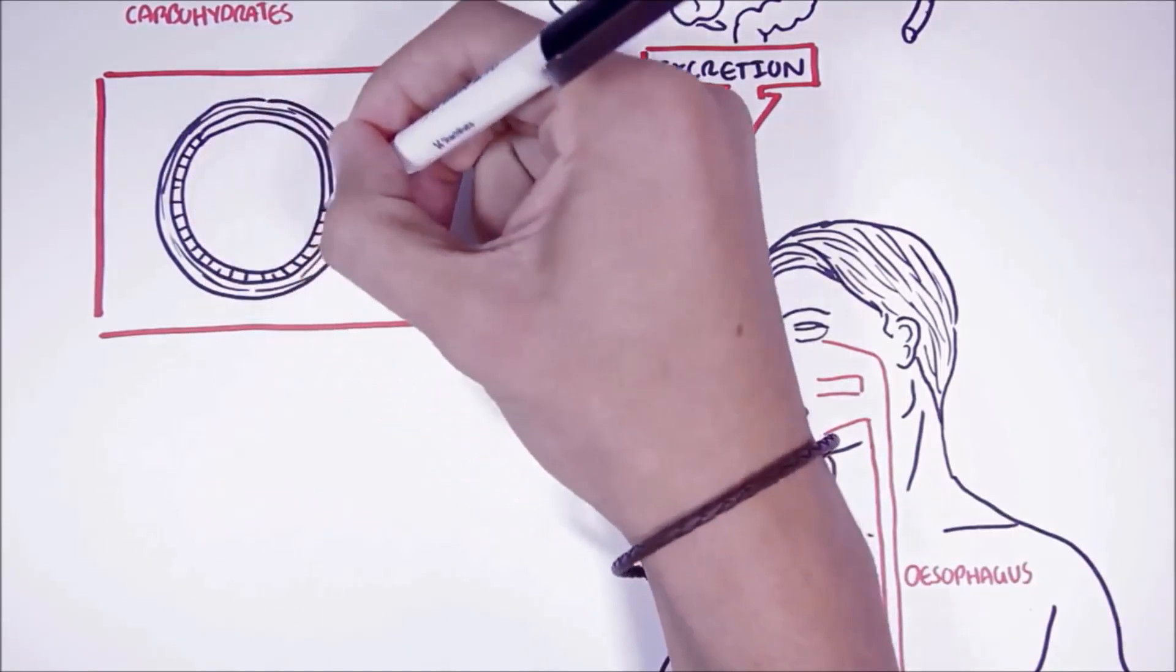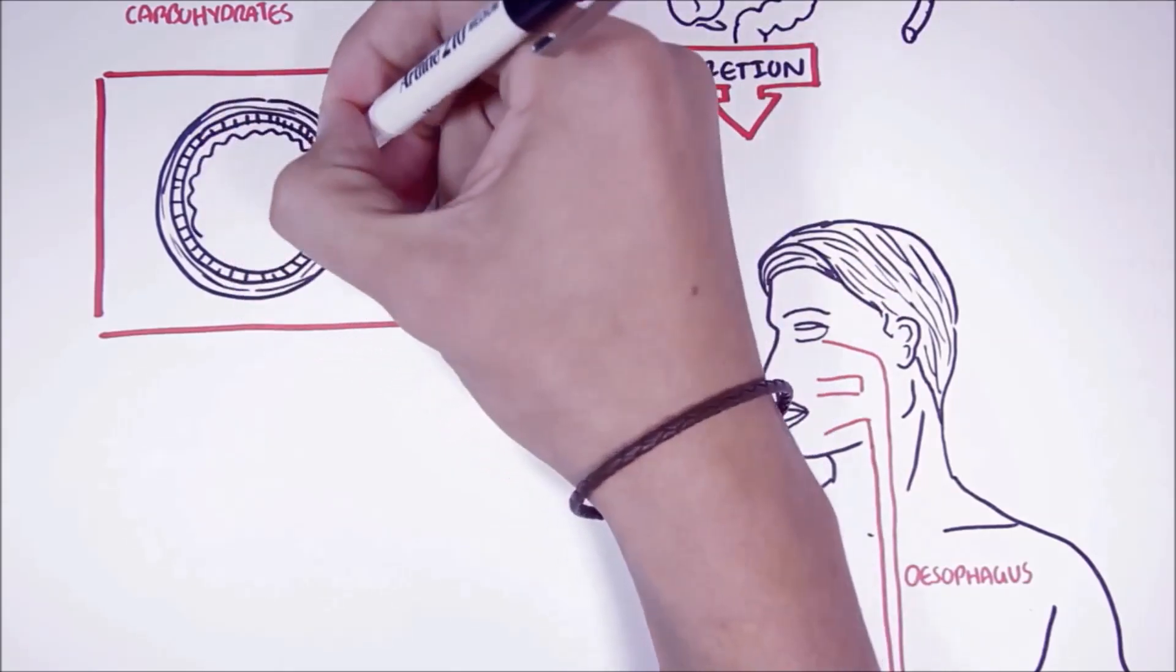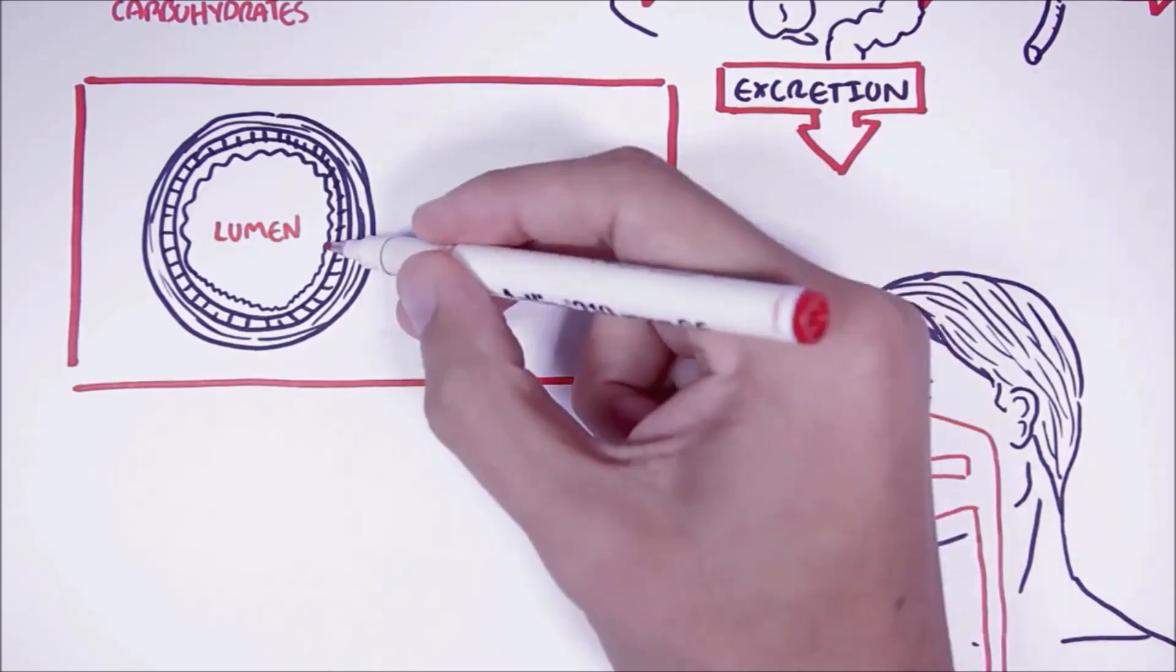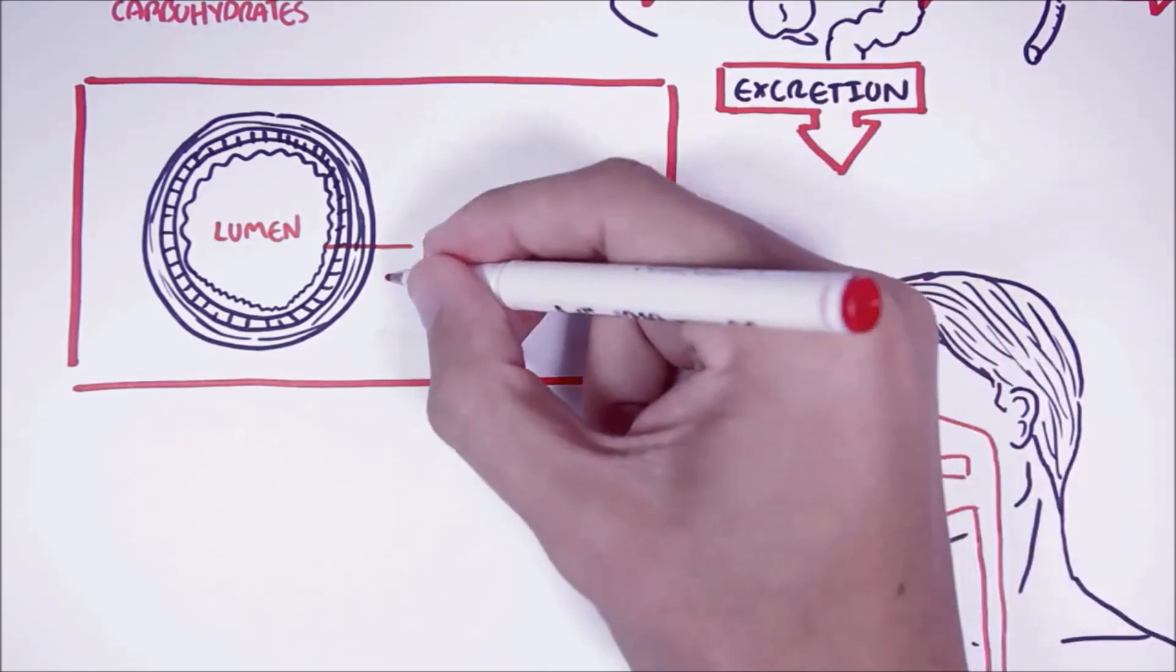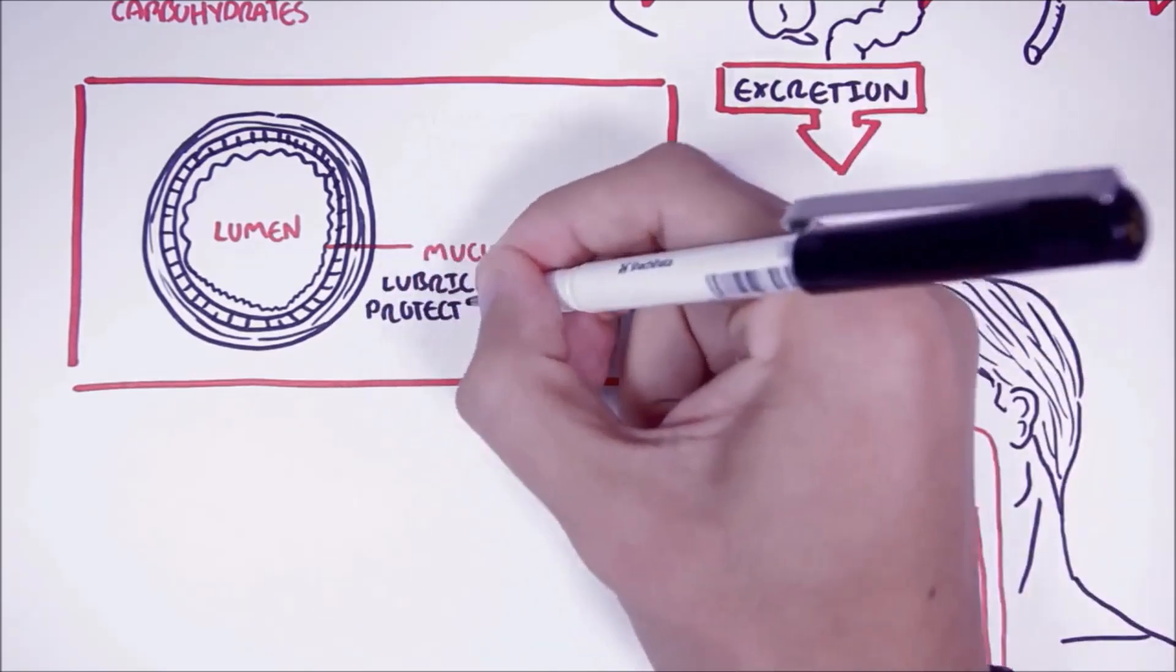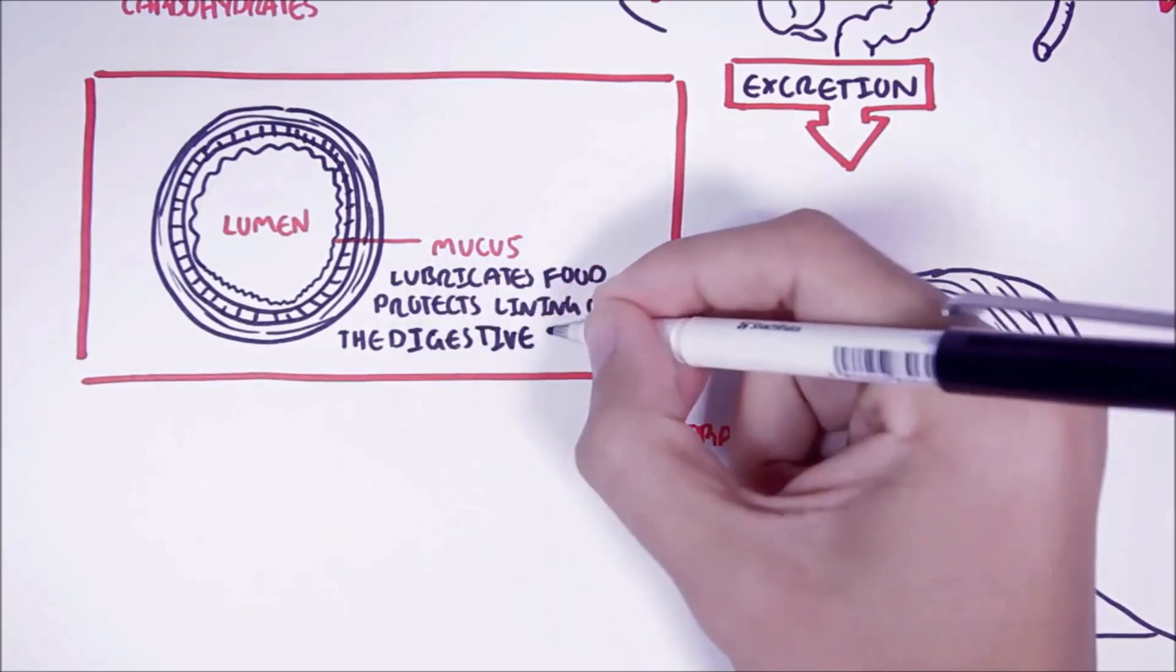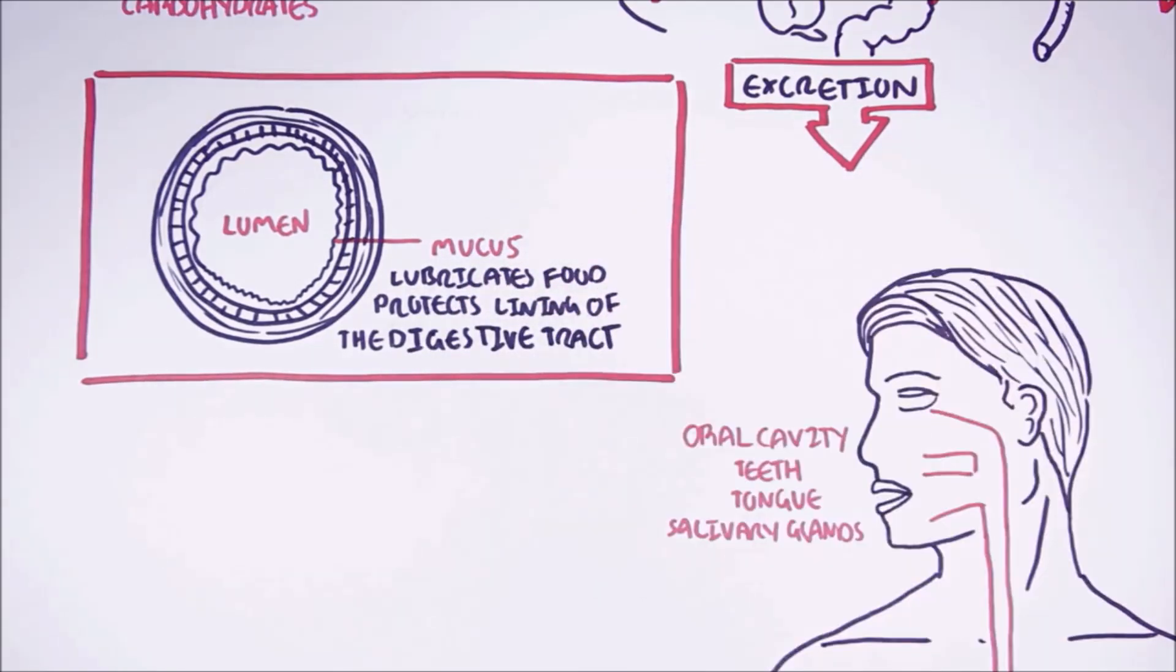The digestive tract has three main layers. The lumen is the inside space of the digestive tract. The first layer is mucus and we find it around the lumen. Mucus lubricates the food and also protects the lining of the digestive tract.